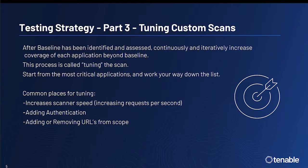The third part of the testing strategy is to tune your custom scans. After baselines have been identified and assessed, continuously and iteratively increasing coverage of each application beyond the baseline is important — this process is called tuning the scan. Start from the most critical applications and work your way down the list. Common areas for tuning include increasing the scanner speed such as the number of requests per second, adding authentication, and adding or removing URLs from the scope of the particular policy being used.